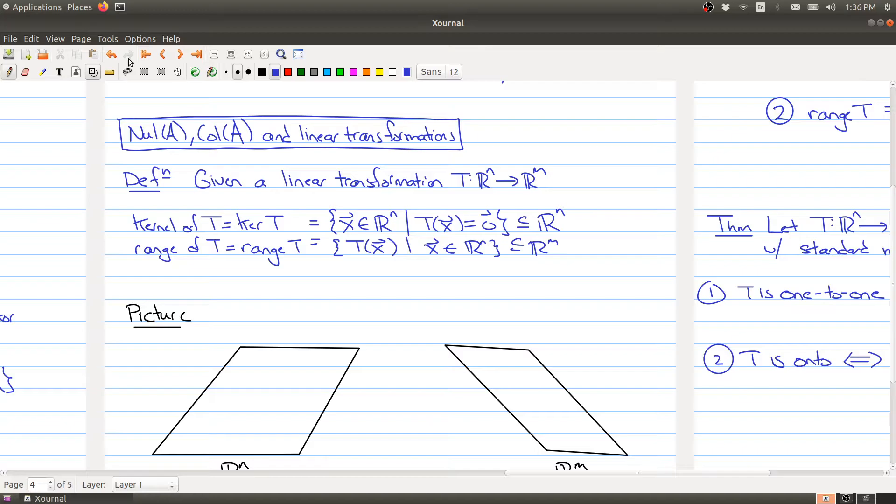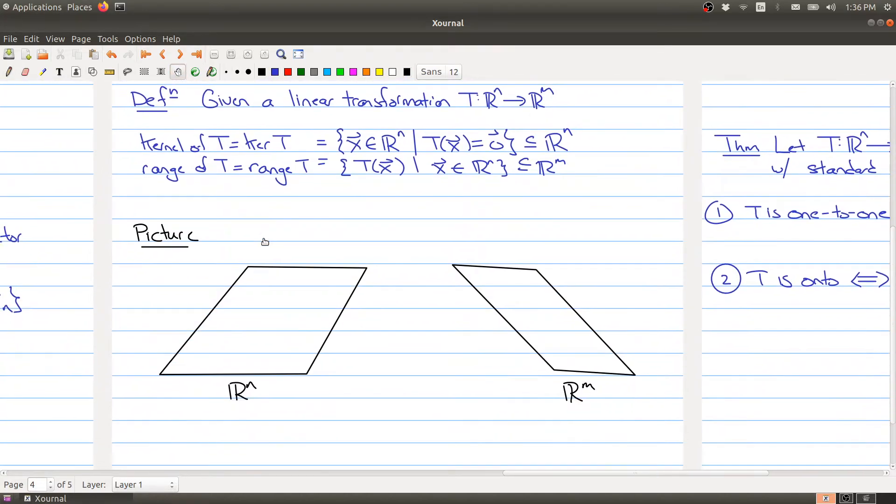I've drawn a picture here to kind of help us illustrate what's going on. We have an Rn on the left side and an Rm on the right side. And the kernel, I'll draw it as red. Let's say that this is the kernel of T. And what that means is that if you were to take any point on this red line, it will get mapped over to the vector zero. So everything here in red gets mapped to there.